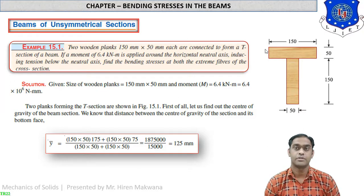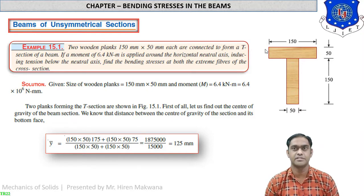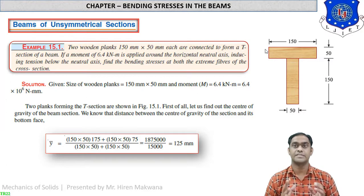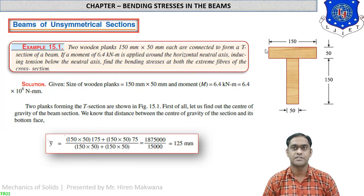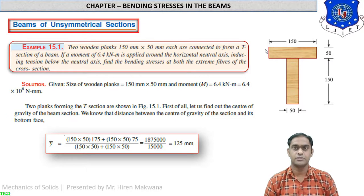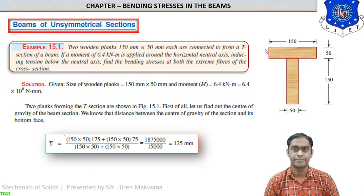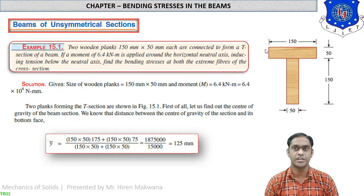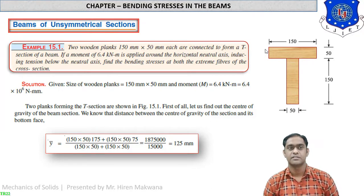Till now, we have discussed numerical on bending stresses and calculated the resisting moment, bending stresses, center of gravity, moment of inertia, etc. for beams of symmetrical sections only — like rectangular sections, circular sections, hollow rectangular sections, and hollow circular sections. For rectangular or circular sections, the center of gravity is exactly at the midpoint. The moment of inertia for a rectangular section is bd³/12, and for a circular section is π/64 × d⁴.